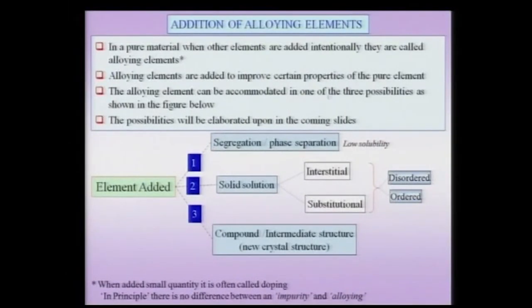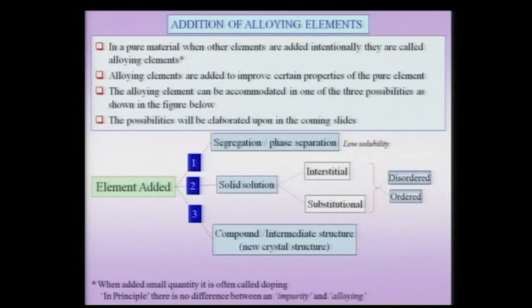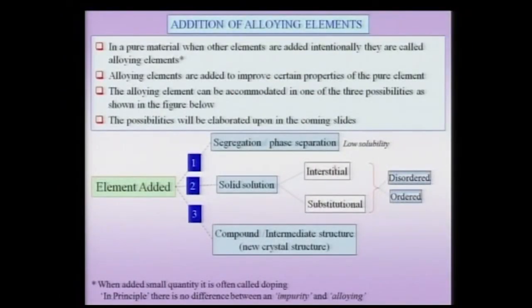The alloying element when you add can be accommodated in one of three possibilities. When you add an alloying element, it can either segregate — that means it has no solubility, or very little solubility, in the parent lattice and therefore it gets segregated. Suppose I am talking about a single crystal, then obviously it can get segregated only to the surface. And suppose you are talking about a polycrystal or a crystal with a lot of defects, then there are other possibilities where this alloying element can go. The second possibility when you add an alloying element is that it can form a solid solution. Now solid solutions are in some sense like liquid solutions, but they have certain very important differences when you contrast them with liquid solutions. When you are talking about a solid solution there are two types: the interstitial solid solution and the substitutional solid solution. Further, both these types of solid solutions can be ordered or disordered. We will take up each one of these cases in some more detail in the coming slides, but this is an overview of the possibilities.